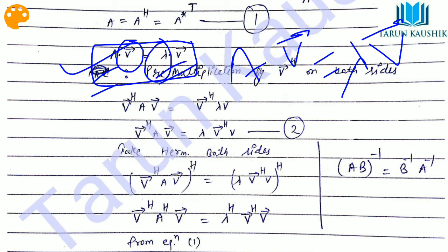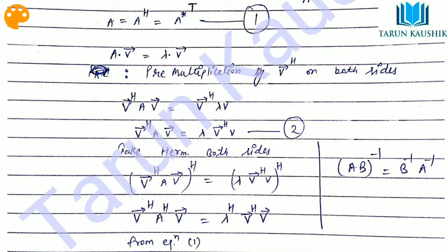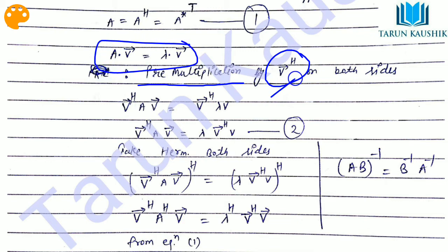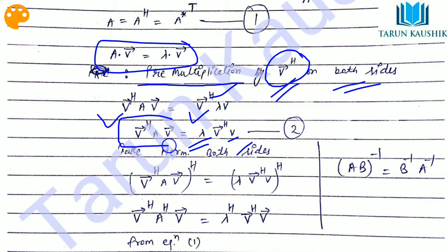Now I pre-multiply both sides of Equation 1 by V^H, the Hermitian of the eigenvector V. On the left I get V^H · A · V, and on the right, since lambda is a constant I can take it outside, giving lambda times V^H · V. Call this Equation 2.